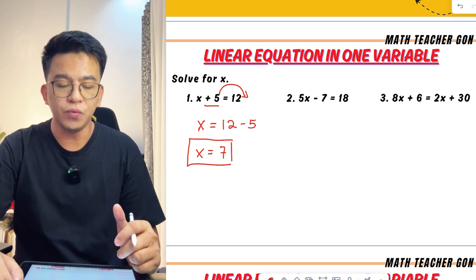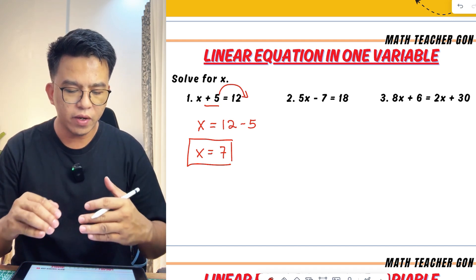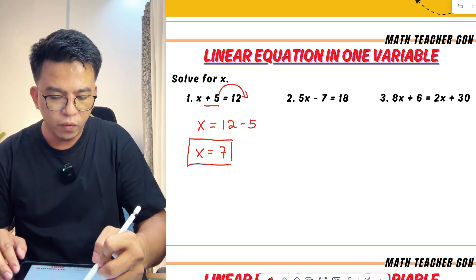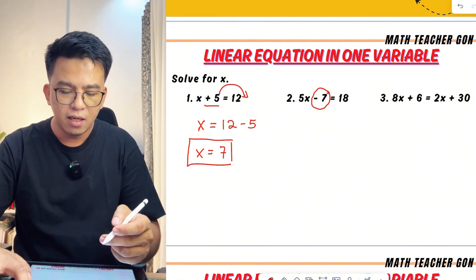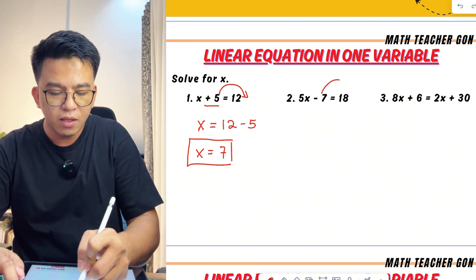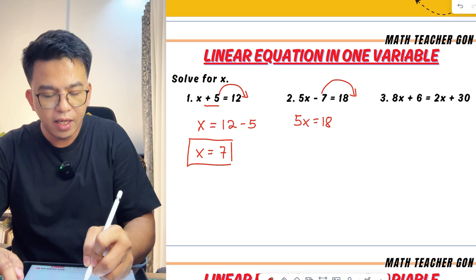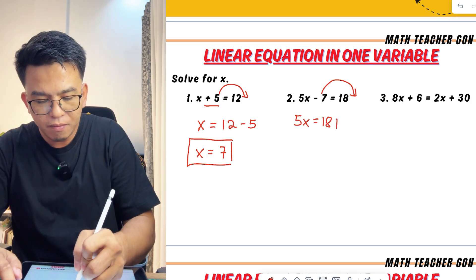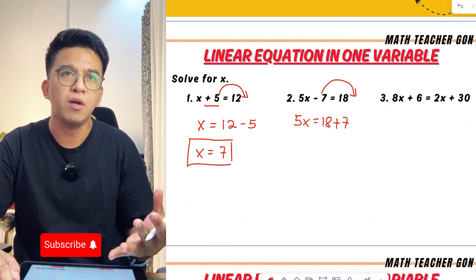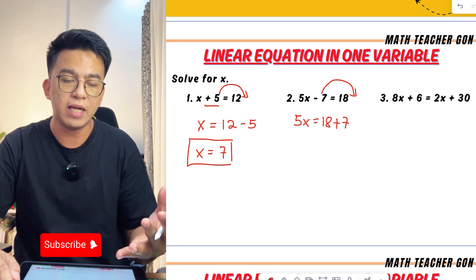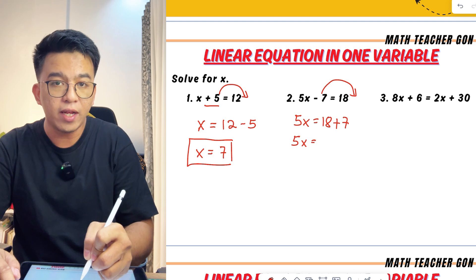Now let's move on to item number 2. For number 2, we are given 5x minus 7 is equal to 18. How are we going to solve this problem? First, we need to eliminate negative 7 on the left side of the equation. That means we need to transpose this negative 7 to the other side of the equation. We have 5x is equal to 18, and then from negative 7 it will become plus 7. That is a shortcut. So we have 5x is equal to 18 plus 7.